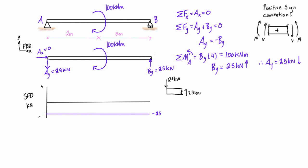If we verify from the other side: starting on the right-hand side, taking a cut somewhere along here, the reaction at B was 25 going up, so on the left-hand side of the cut we'd have a shear force of 25 going down — that's negative 25. So no matter where we go, the shear force is negative 25 kilonewtons, and it's actually unaffected by crossing past the applied moment.